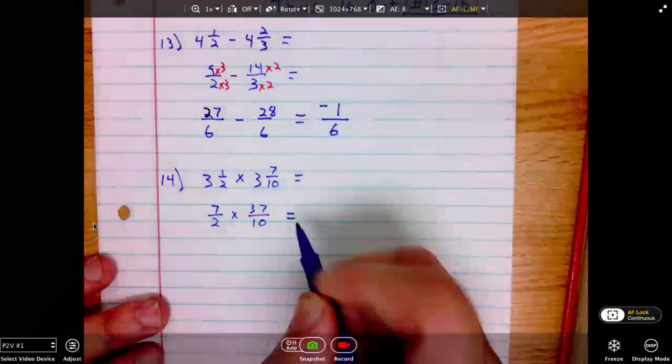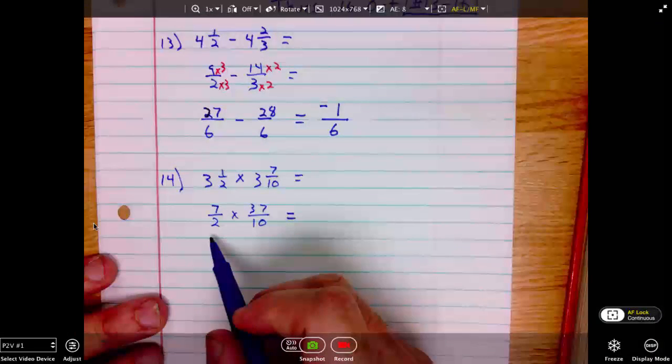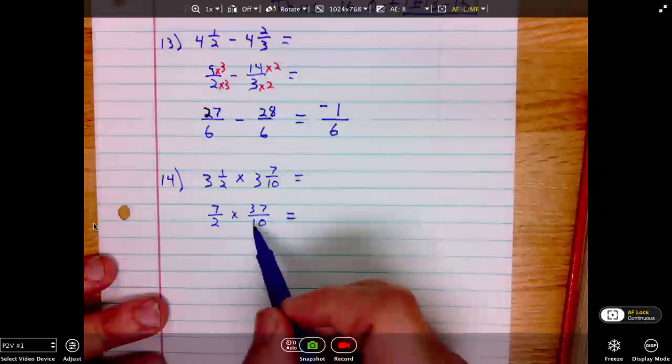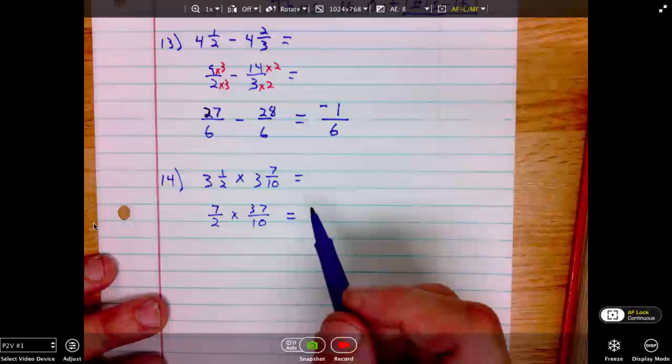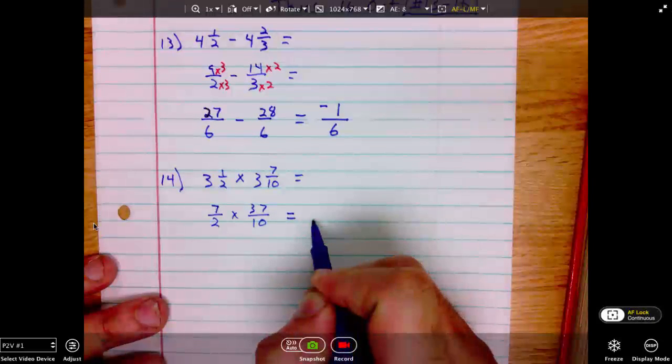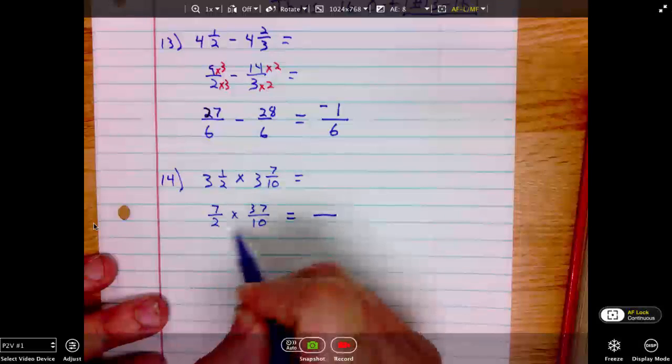When multiplying fractions, we don't need a common denominator. We can multiply straight across. If anything in the bottom will cancel with anything in the top, we do so. But we don't have that. 2 times 10 is 20.